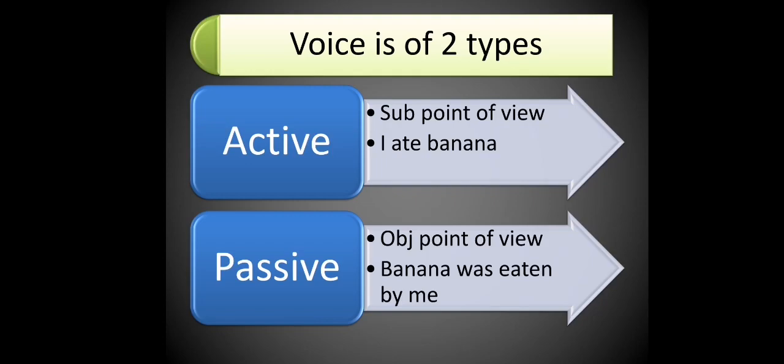For example, 'Ramudu killed Ravana.' Who is doing this? Ramudu. So this is from Ramudu's point of view — active voice. If you say the same sentence from Ravana's point of view, that becomes passive voice.